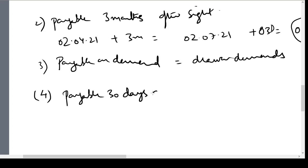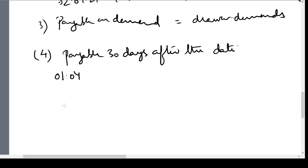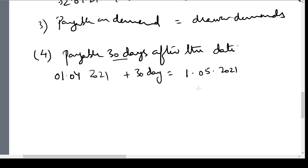Next example: payable 30 days after date. We start from 1st April 2021 and add 30 days. April has 30 days, so by 30th April, 29 days are consumed from 1st April, and one more day takes us to 1st May 2021. Adding 3 days of grace gives us 4th May 2021 as the due date.